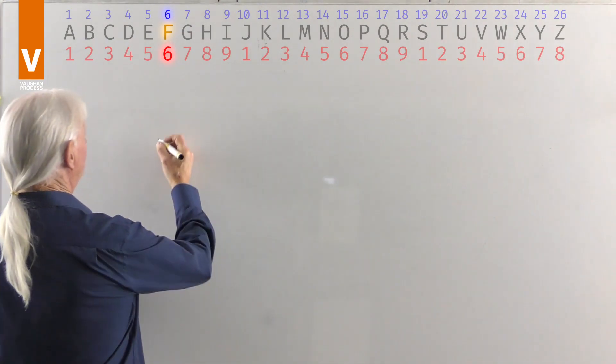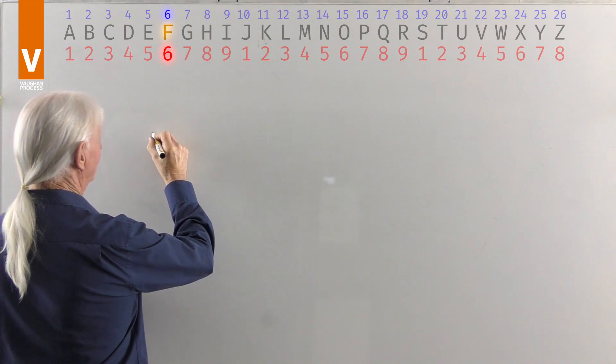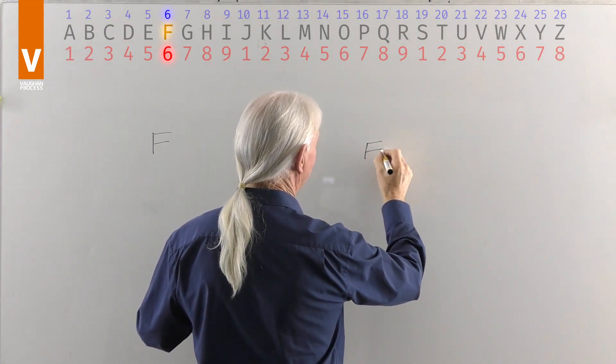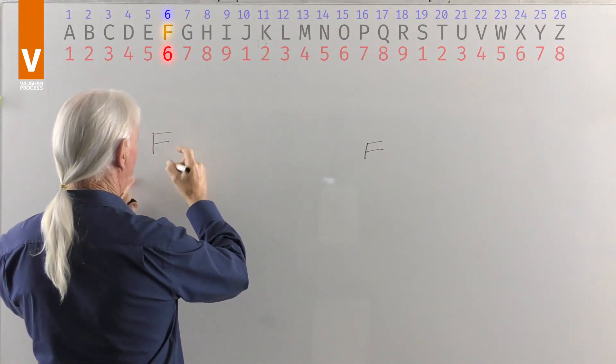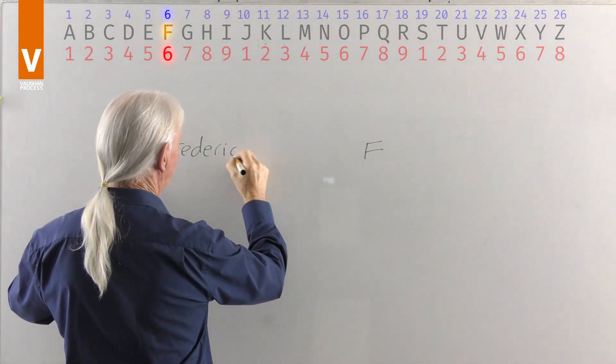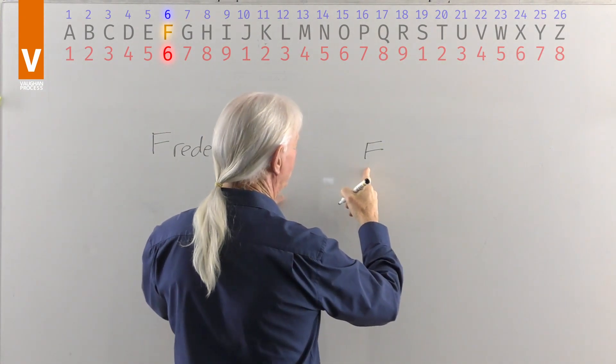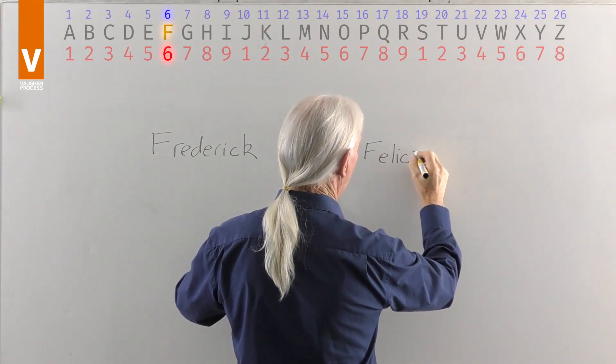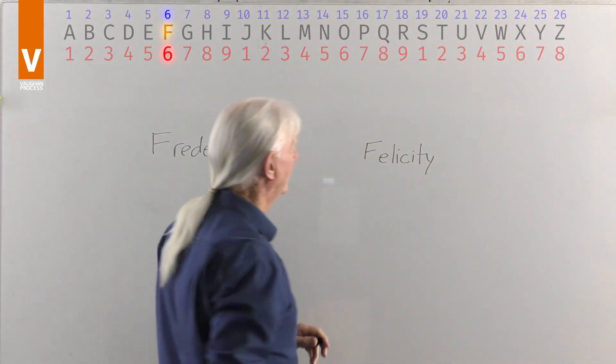So the name of today, we're going to use the letter F from Arlen Female, and we're going to use Frederick, F-R-E-D-E-R-I-C-K, and Felicity, F-E-L-I-C-I-T-Y.